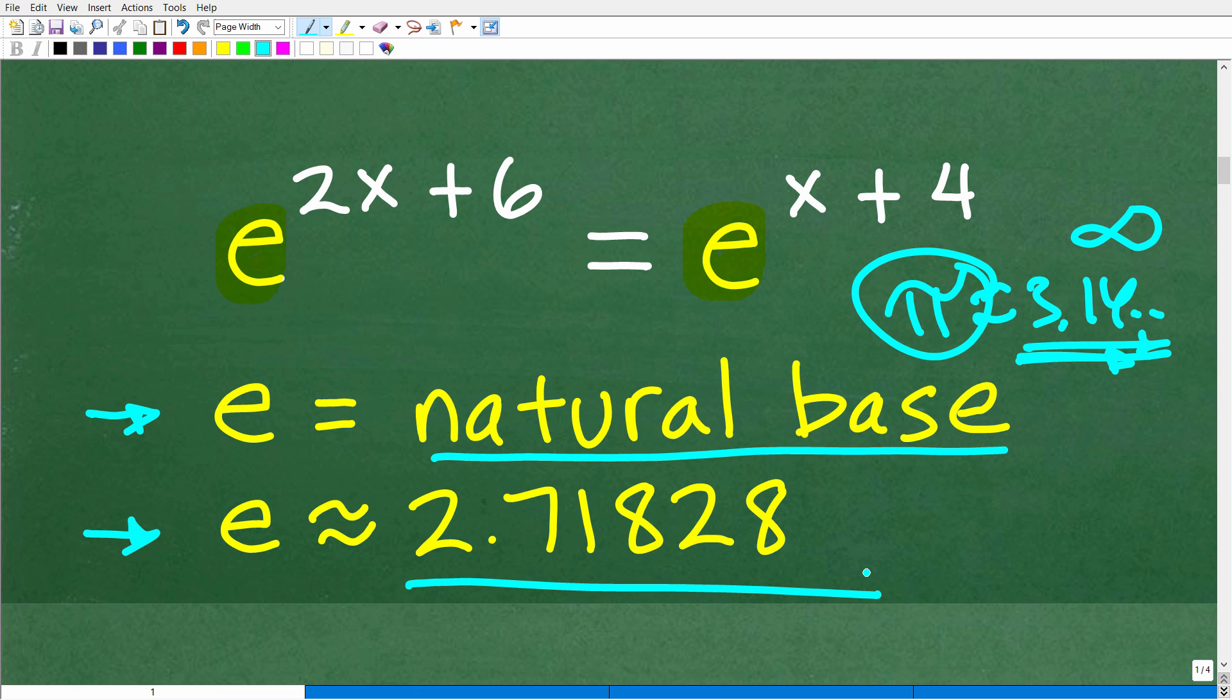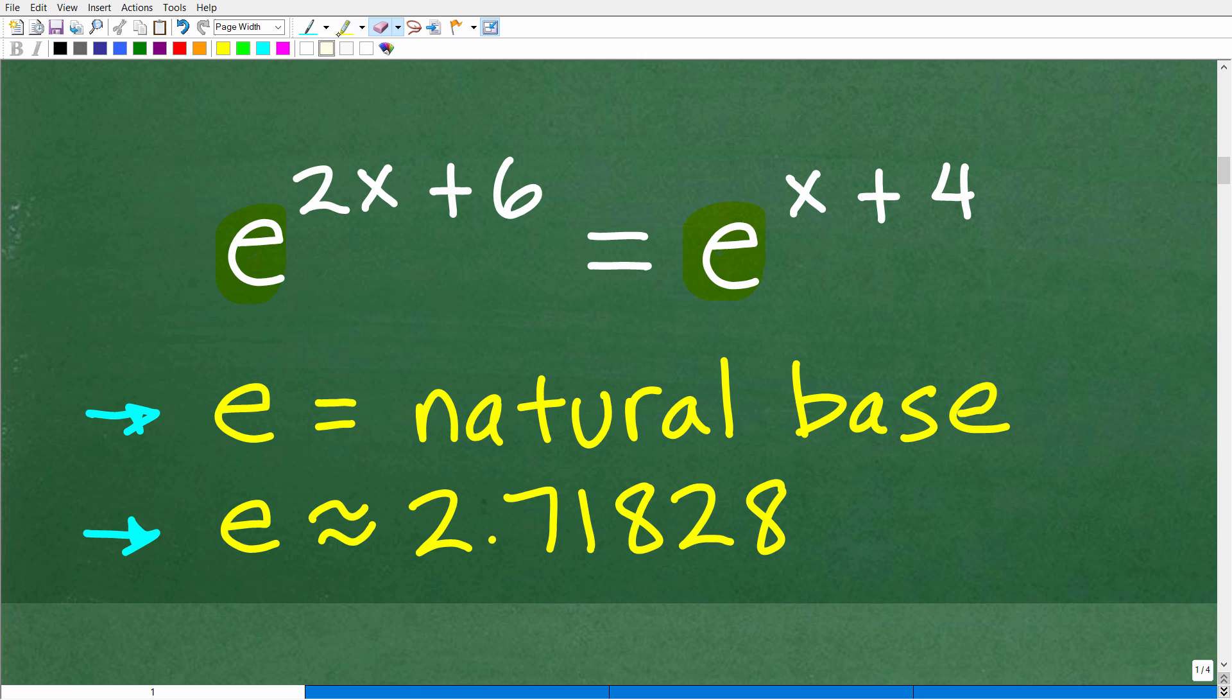This symbol here represents all the infinite digits of pi. Same thing with the natural base. Instead of writing out the entire digit, which is impossible because it goes out to infinity. And by the way, the natural base E is approximately equal to 2.71828, et cetera, et cetera. You can pull this number up on your calculator. But again, remember, you're only dealing with an estimation, same thing as if we're talking about pi. The natural base E is so important, it basically gets its own little letter here. This is an extremely important number in mathematics.